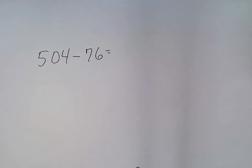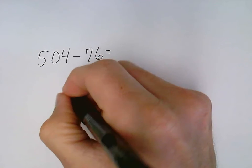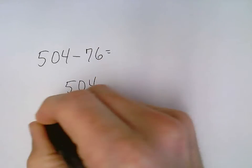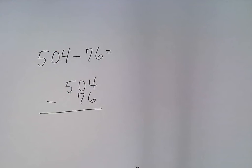To do this problem, I need to write it vertically: 504 minus 76, making sure my place values are nice and neat lined up—ones with ones, tens with tens, hundreds with hundreds.